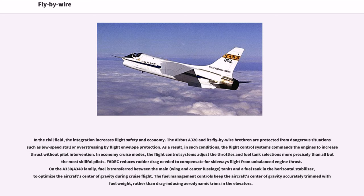The Airbus A320 and its fly-by-wire aircraft are protected from dangerous situations such as low-speed stall or overstressing by flight envelope protection. As a result, in such conditions the flight control systems command the engines to increase thrust without pilot intervention. In economy cruise modes, the flight control systems adjust the throttles and fuel tank selections more precisely than all but the most skillful pilots. On the A330-A340 family, fuel is transferred between main wing, center fuselage and horizontal stabilizer tanks to optimize the center of gravity during cruise, keeping it accurately trimmed with fuel weight rather than drag-inducing aerodynamic trims in the elevators.